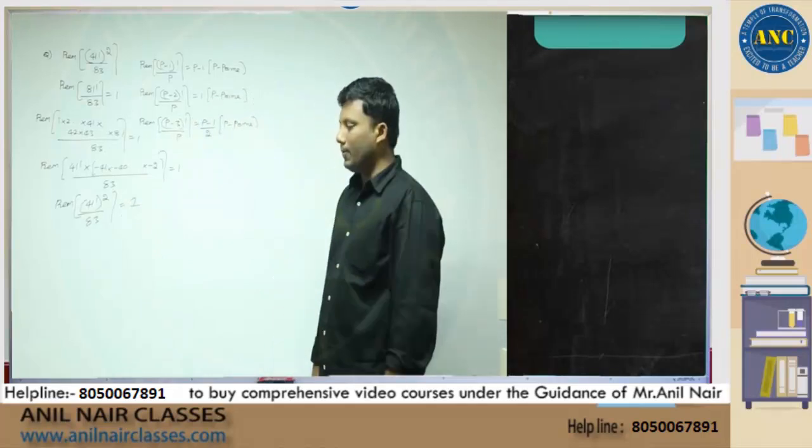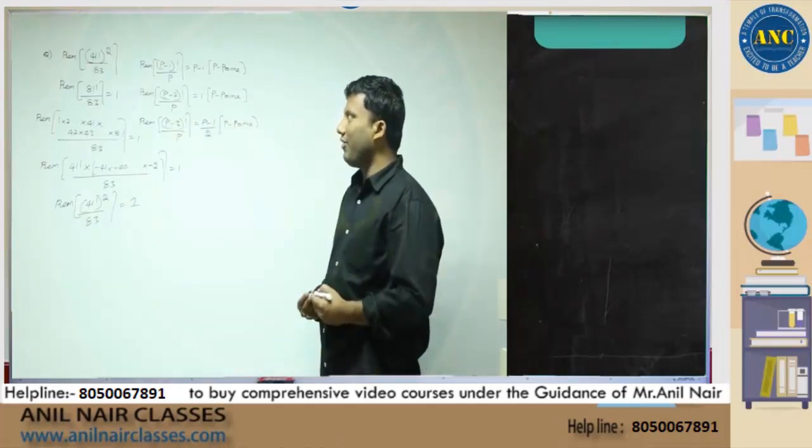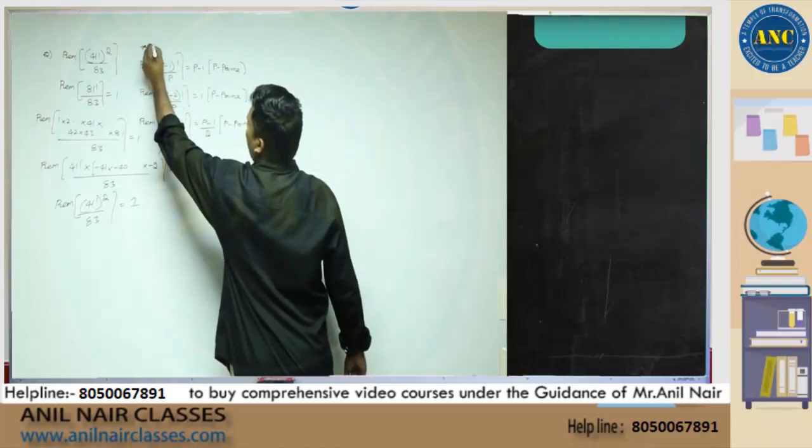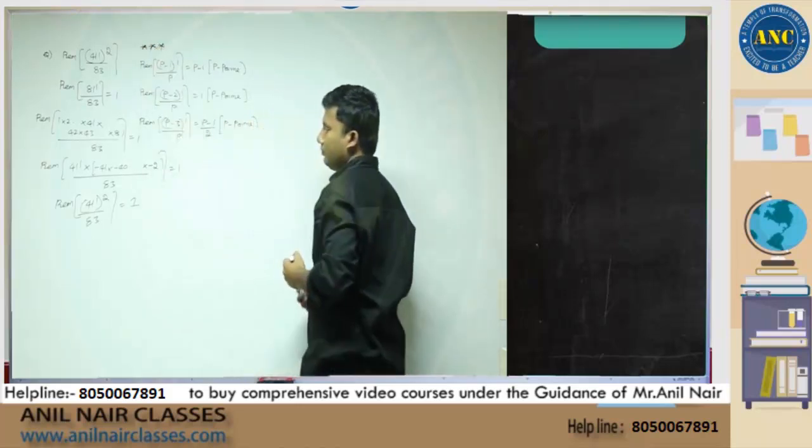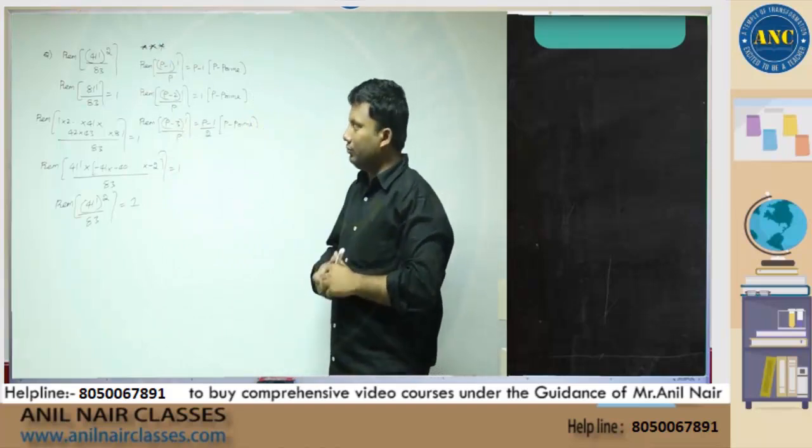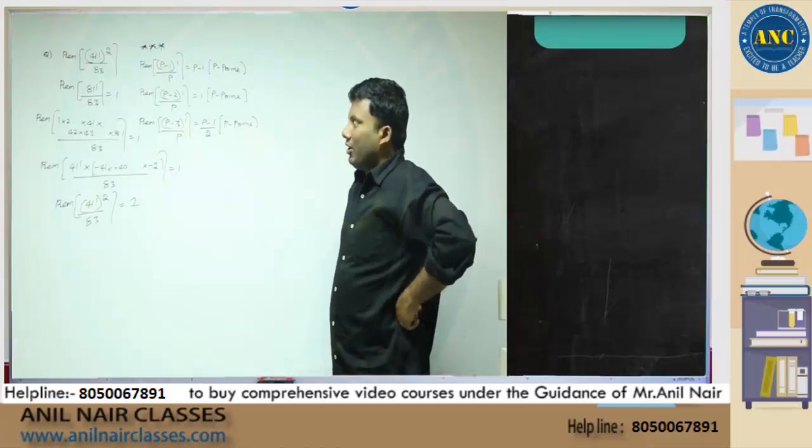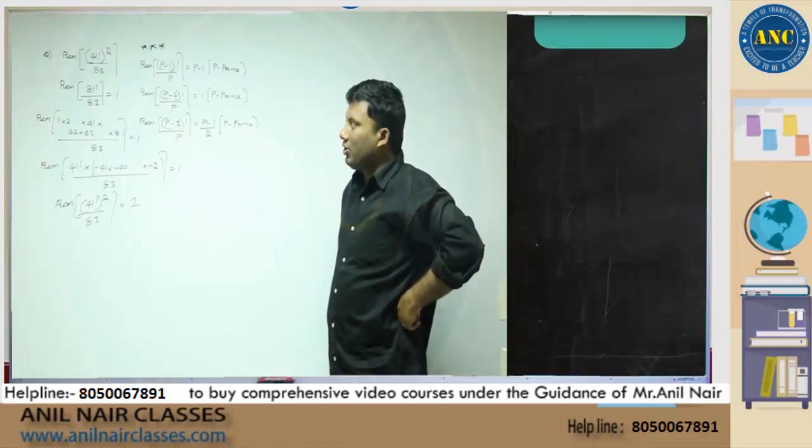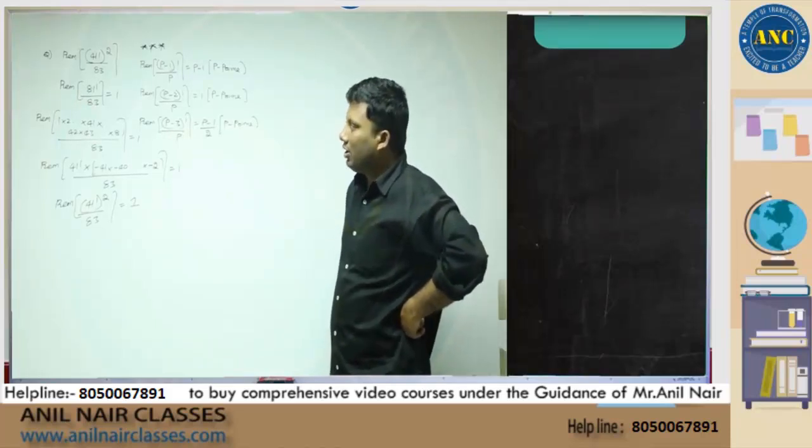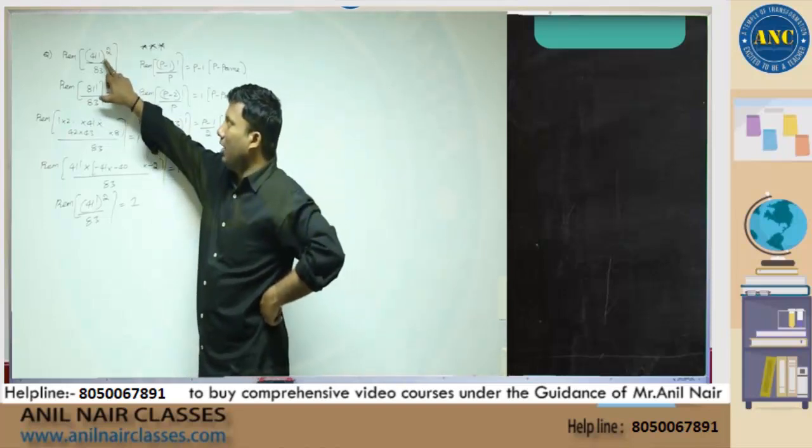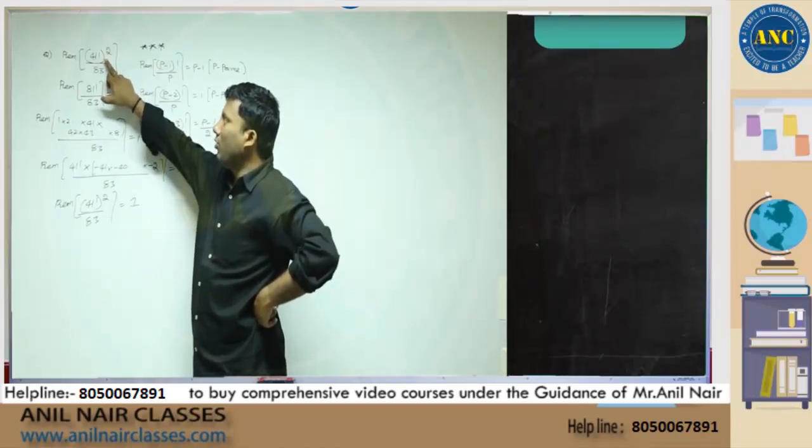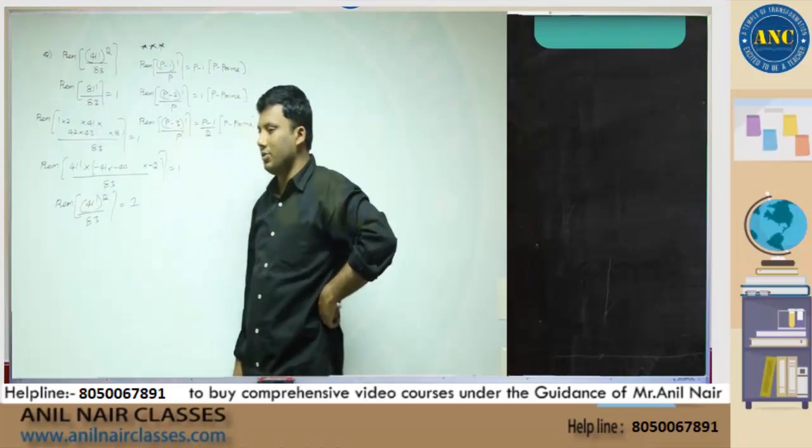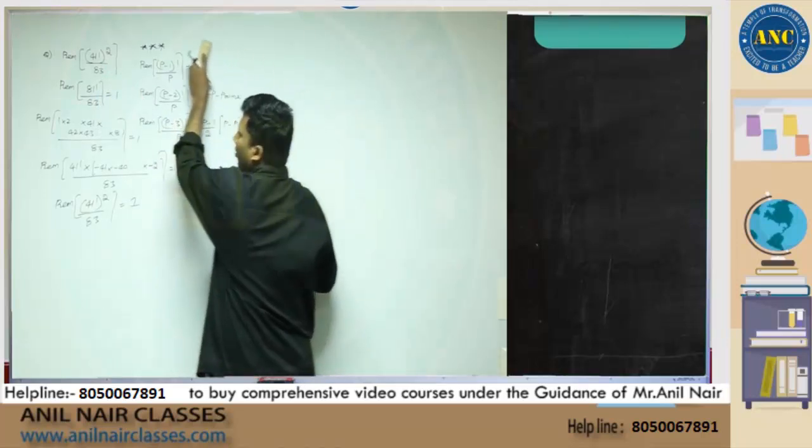I am sorry. 41 factorial whole square divided by 83. These are some important key points. It is not always. Please do not draw any conclusion that if it is P, P minus 1 by 2 factorial whole square by P, it is always 1. No, it depends upon the future. But the answer is 8 factorial whole square.